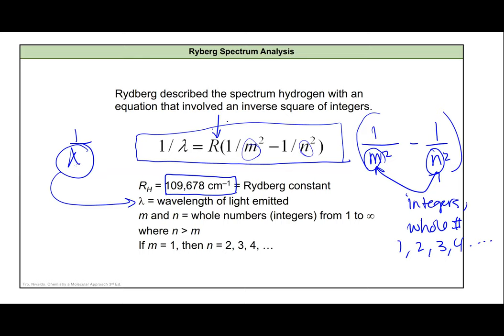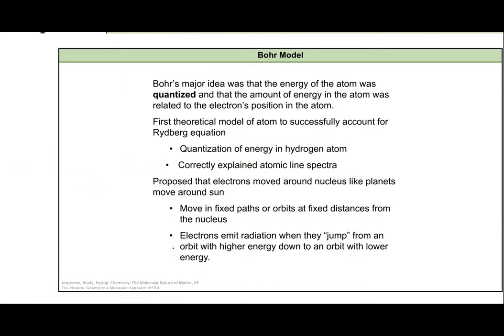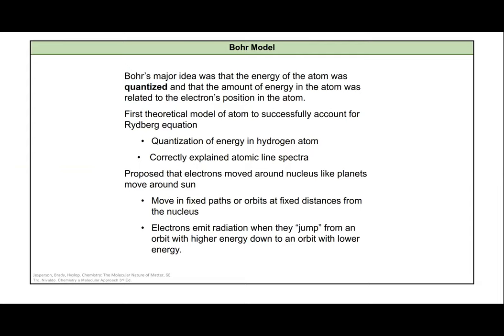Bohr's model of the atom explains this. It provides an explanation, some scientific reasoning behind this pattern that's observed by Rydberg. What Bohr's idea or Bohr's model of the atom states is that there are quantized energy levels that the electron can occupy. The electron's position in the atom happens at specific distances from the nucleus and not in between. It's like if you were walking up a flight of stairs - you could be at this distance from the ground or this distance, but you couldn't be in between the two. That's what a quantized position for electrons means - it can be in one set distance from the nucleus or another, but not in between.